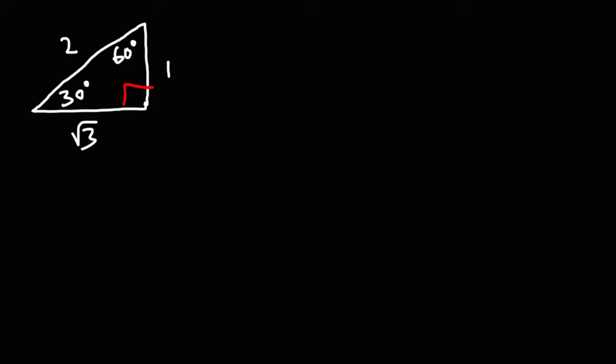The first thing we need to talk about is the 30-60-90 right triangle. You need to be familiar with this special triangle. Across the 30 degree angle is 1, across the 60 degree angle is the square root of 3, and the hypotenuse is 2.